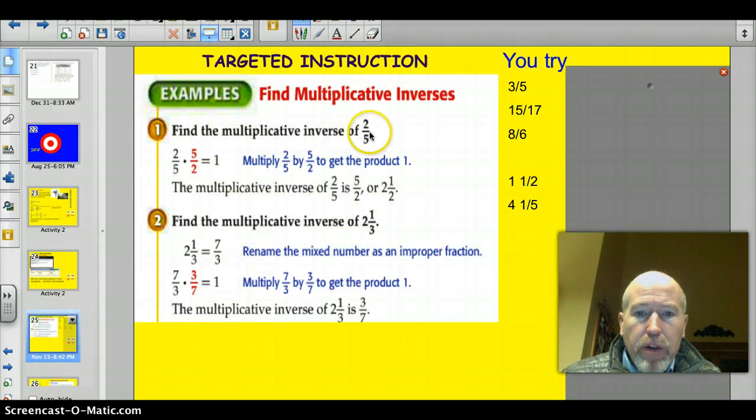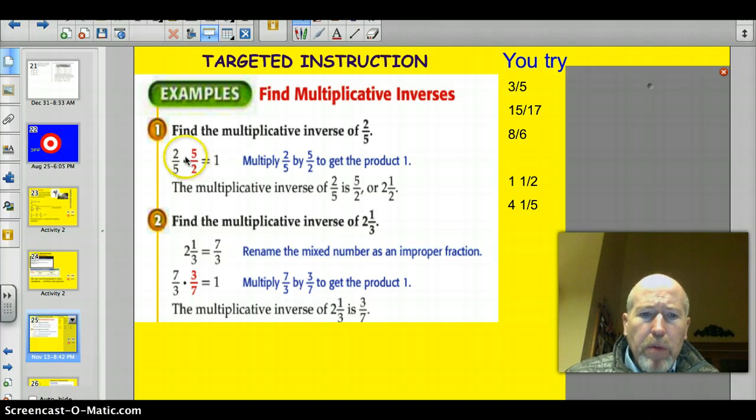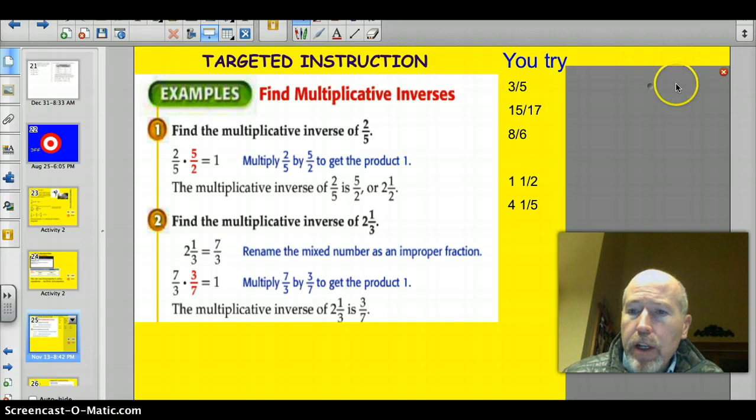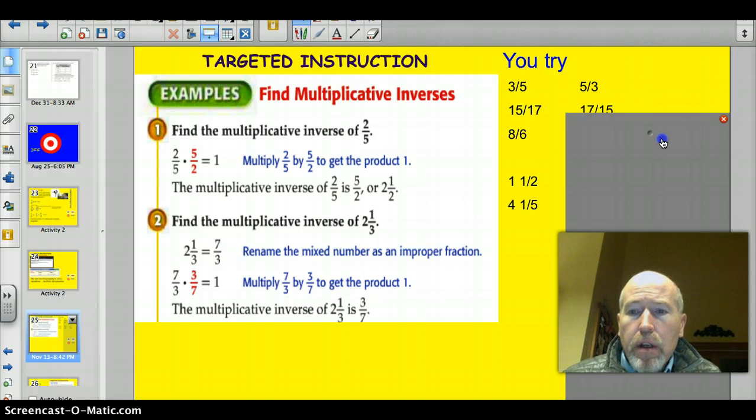Here, find the multiplicative inverse of 2/5. Well, if you flip the number, flip the fraction, it's 5/2. That's the multiplicative inverse. If I multiply those together, 2 times 5 is 10. 5 times 2 is 10. By flipping them and multiplying, you always have the same two problems on the top and the bottom. So of course you're always going to get 1. Let's just have you try these three right here. Go ahead and find the multiplicative inverse of 3/5 and so on. All right, let's see how you did. Did you flip them? 5/3, good. This one, flip it. 17/15, it's good. And 8/6. Flip it. 6/8.